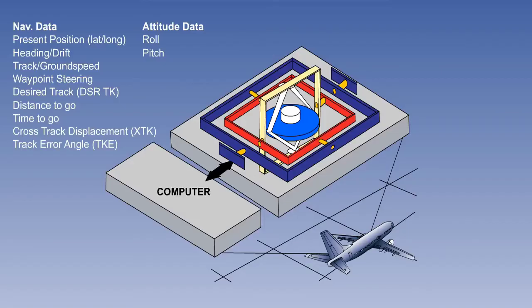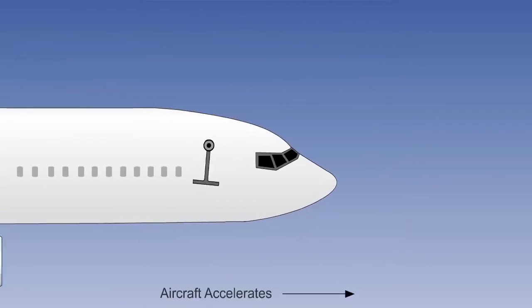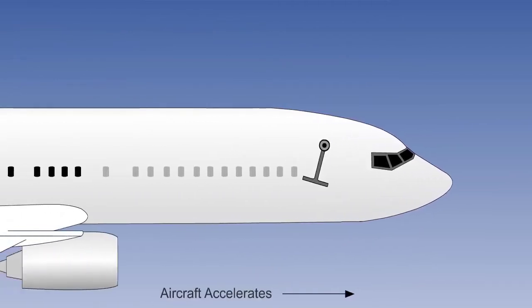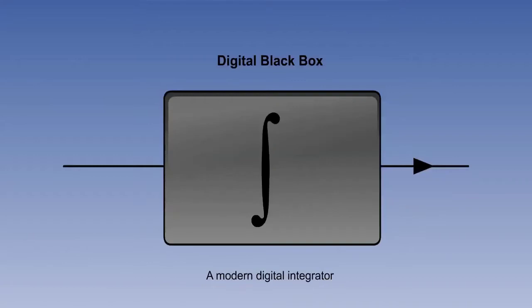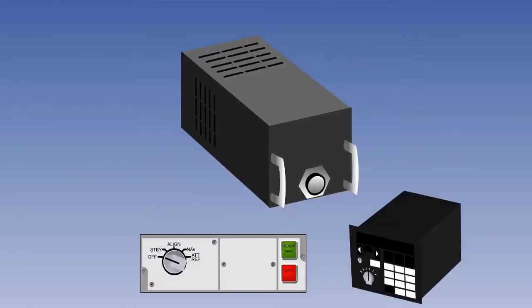We also said that it gives a great deal more information than just present position latitude and longitude. The accelerations are detected by accelerometers, then converted firstly into velocities and secondly into distances by integrators. We are now going to examine this measurement and integration process more closely.